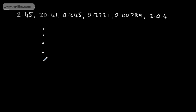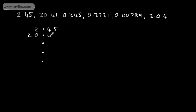fill in a place value chart — a hundreds, tens, and units chart. So if we look at 2.45, we have 2 units, 4 tenths, and 5 hundredths. If we look at 20.41, we've got 2 tens, 0 units, 4 tenths, and then 1 one-hundredth.